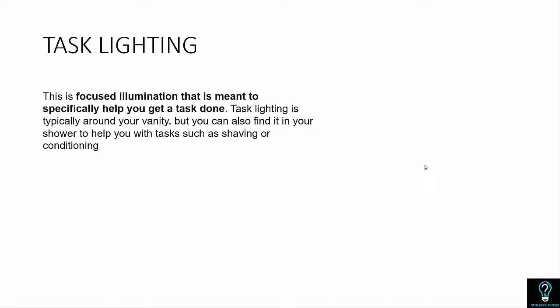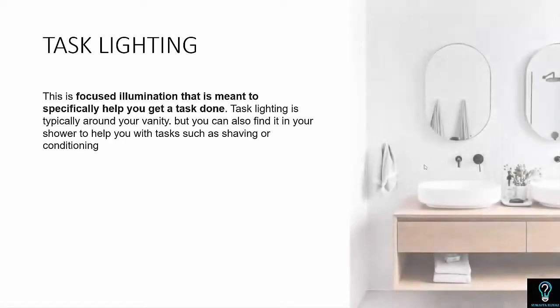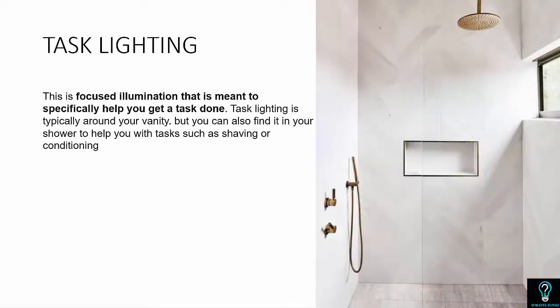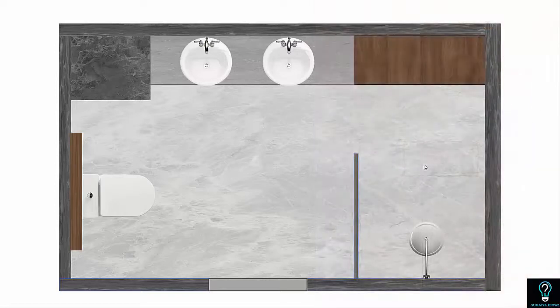We'll be starting with task lighting. Task lighting is a focused illumination meant to specifically help you get a task done. It is typically around a vanity, but you can also find it on the way to the shower to help with tasks such as shaving or conditioning.